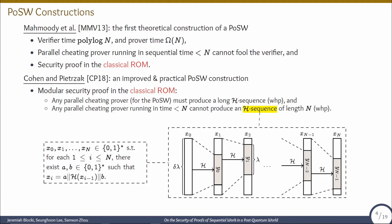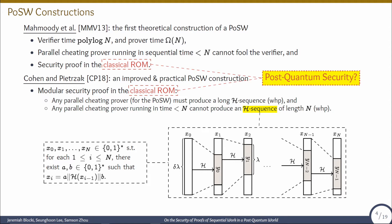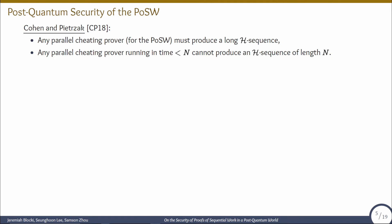An H sequence is a sequence of binary strings such that for each i, the hash of x_{i-1} is a substring of x_i. Cohen and Peterczak showed a strong relationship between an H sequence and a proof of sequential work, and reduced the problem to finding a long H sequence. But in both works, security proofs are in the classical random oracle model, so a natural follow-up question is whether security is still guaranteed in the quantum random oracle model.